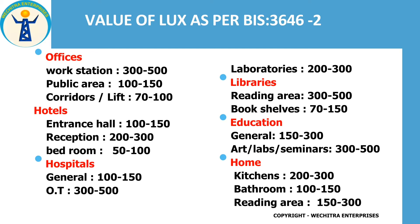Talking about libraries: reading areas have a lux value of 300 to 500, and book stacks have a lux value of 150. In the educational sector like colleges and schools, the general area has a lighting requirement of 150 to 300 lux. Other areas like art labs, seminars, and study areas have a lux value of 300 to 500, because they require more focus.